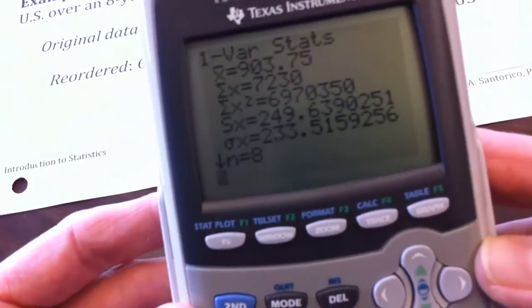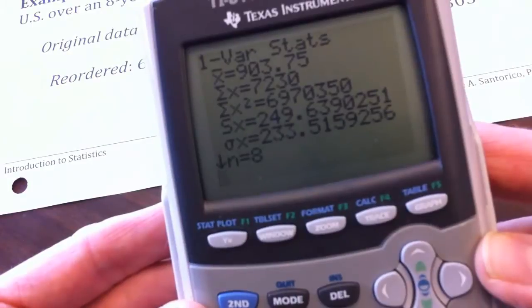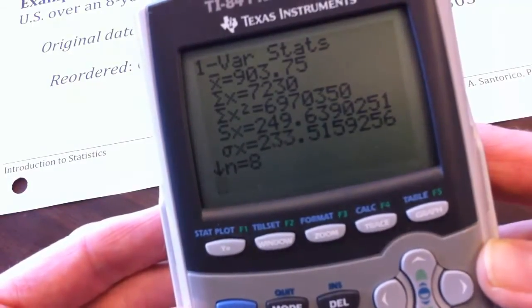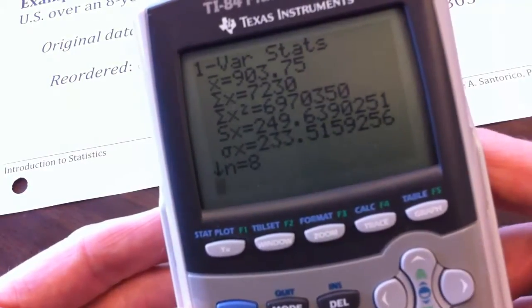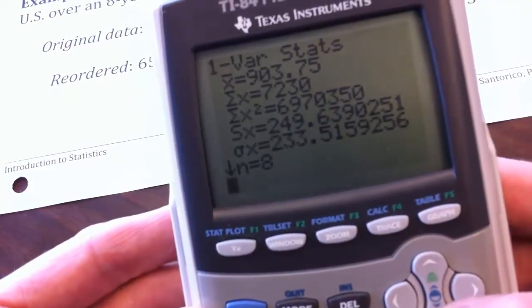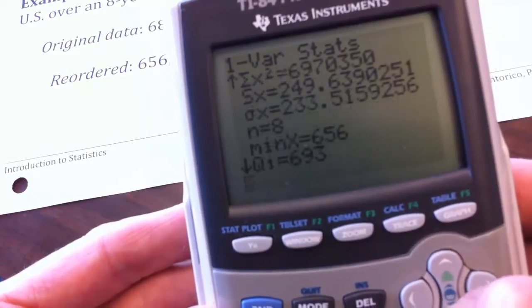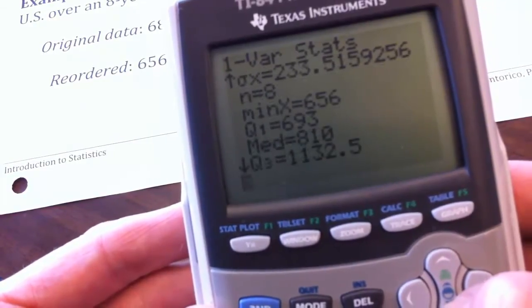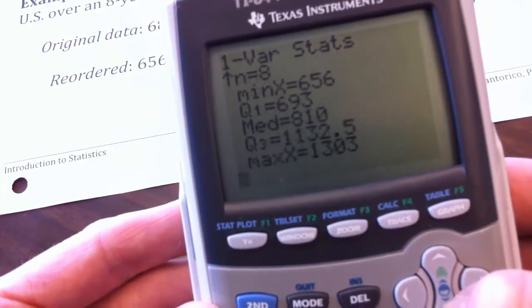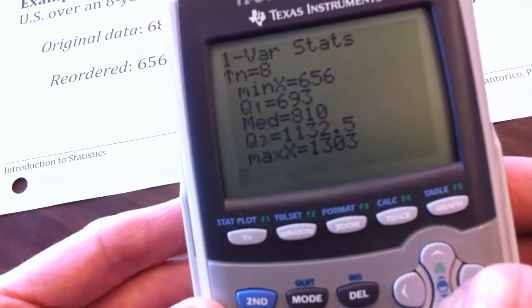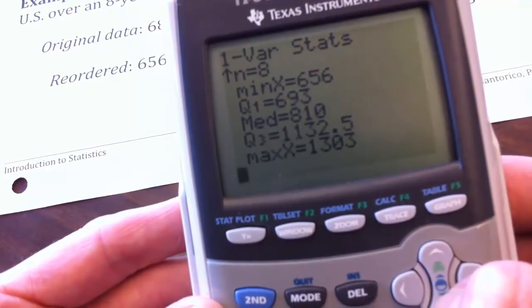It gives me all sorts of good stuff. So there's my mean, my mean is 903.75. It gives me, these are other things that we'll be talking about, but it gives me my variance, my standard deviation, my min. We're going to learn about quartiles, it also gives me my median so we can check ourselves there, and our max.